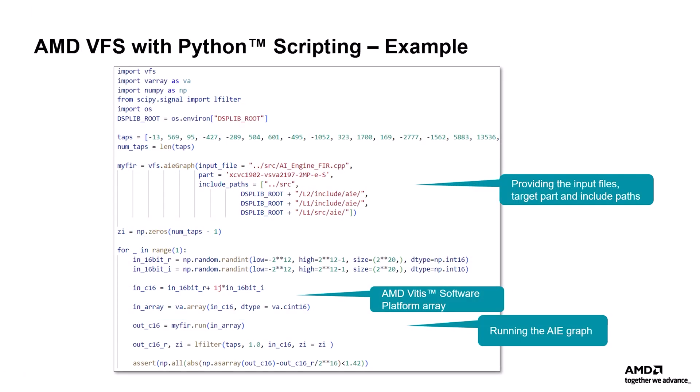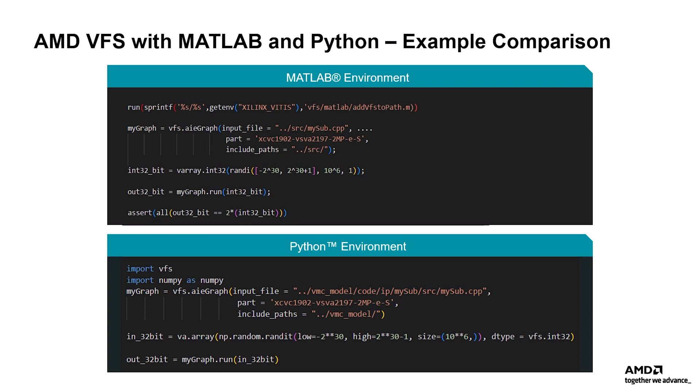An example design using AMD Vitis functional simulation with a Python script and the NumPy framework is shown here. You can create an array from a NumPy array, list, or tuple, specifying a VFS data type if using a list or tuple. Here is a comparison of the MATLAB and Python code environments when calling the AI engine graph. The MATLAB design follows the Python idea of having a container class as the interface on the user's end. However, unlike the Python implementation, the MATLAB implementation is done considering MATLAB user habits. AMD Vitis functional simulation has the same look and feel in both environments, and users can choose either framework based on their preferences.